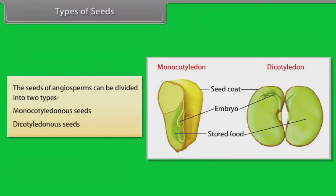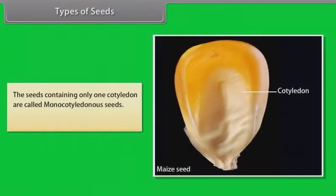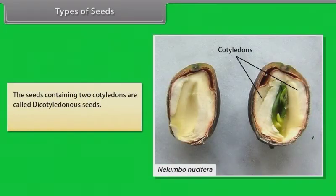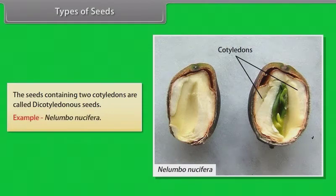The seeds of angiosperms can be divided into two types. Seeds containing only one cotyledon are called monocotyledonous seeds — example, maize. Seeds containing two cotyledons are called dicotyledonous seeds — example, Nelumbo nucifera.